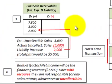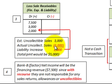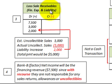In an alternative scenario, if the actual uncollectible sales were $5,000 instead of the estimated $3,000, Corporation A would have to pay Bank B $5,000. The recourse liability would need to increase from $3,000 to $5,000, an increase of $2,000. This means the loss on sales of receivables increases by another $2,000, and since it involves a cash payment, cash is reduced by $5,000.